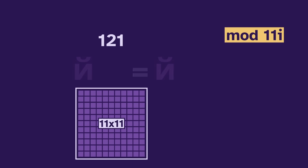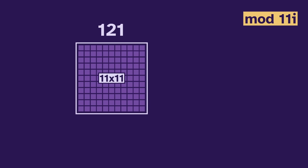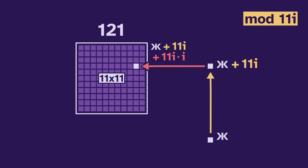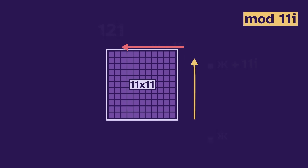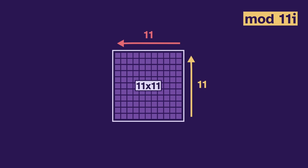The 121 is the number of rectangles in this 11 by 11 grid. We get this grid because for any starting point, we can add or subtract 11i, which moves us 11 units vertically. And we can add or subtract 11i times i, which moves us horizontally. So we'll always be able to get into this grid, because the side lengths are 11.